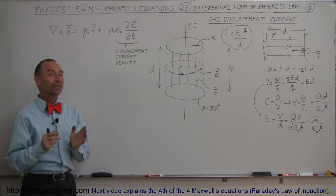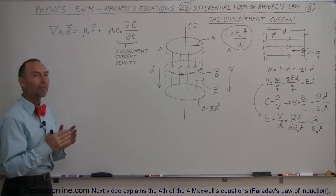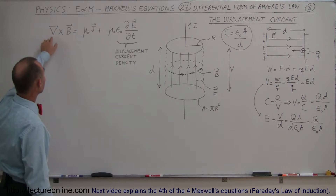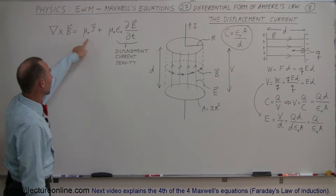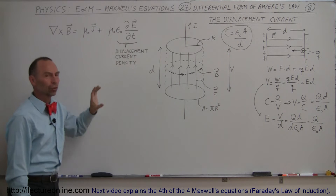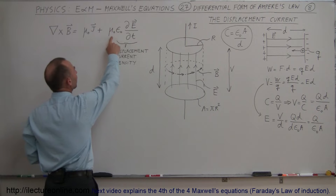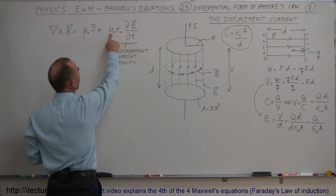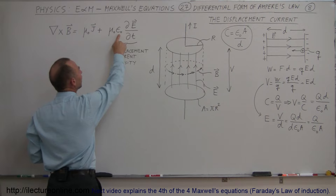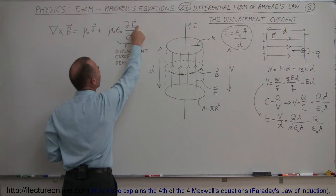Welcome to Electronline. Now we're going to take a closer look at the entire form of Ampere's law in differential form. Here it is: the curl of B is equal to mu sub naught times the current density, plus this additional term. This additional term says that it's mu sub naught times epsilon sub naught — permeability of free space times permittivity of free space — times the partial derivative with respect to time of the electric field.